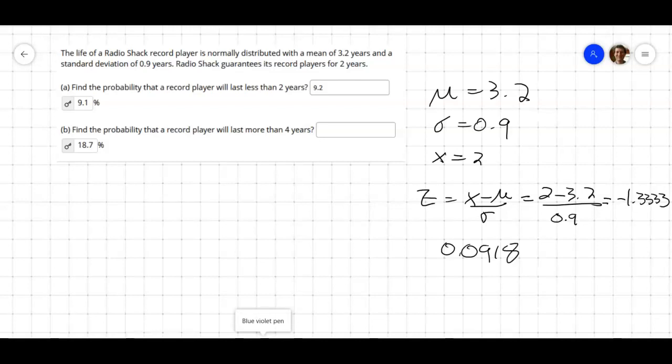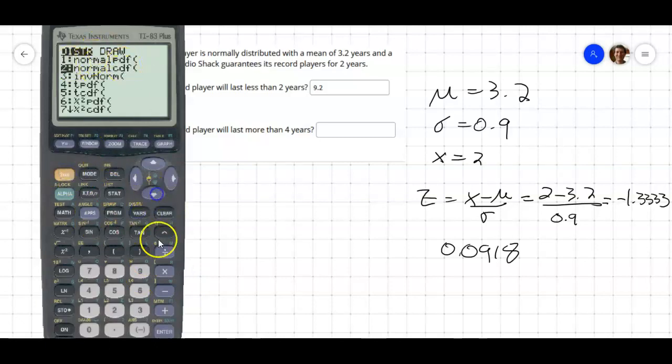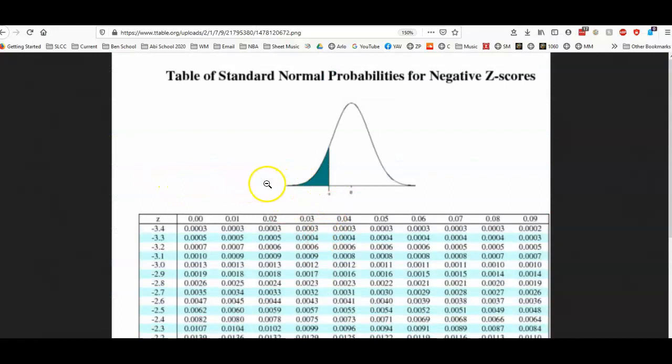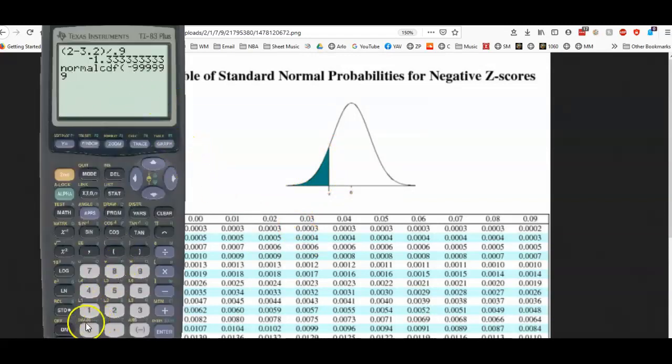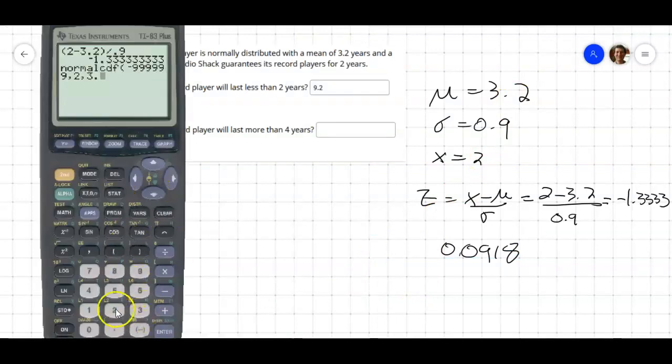Now, rounded up, that would be 9.2%. The answer says 9.1%. If we take a look at our calculator and let our calculator do the actual full amount, it's distribution, normal CDF. So if we want to go from negative on the left, so we're basically asking the calculator to go from negative infinity and working the area all the way up to this value. So we want to go up to 2, where the mean is 3.2, and the standard deviation is 0.9. This will be the closest we can get to the answer.